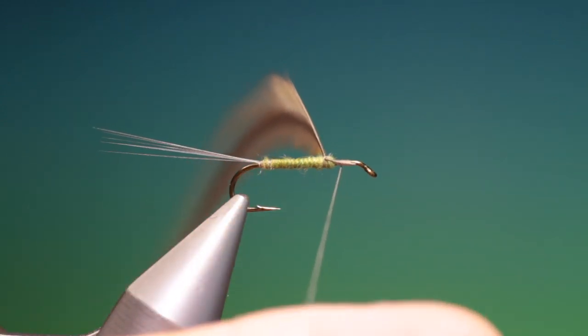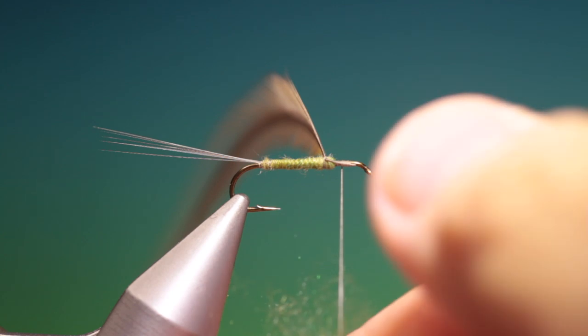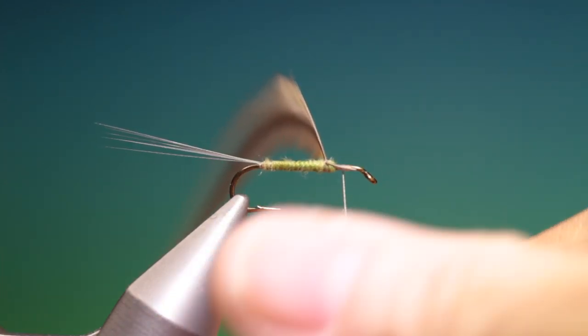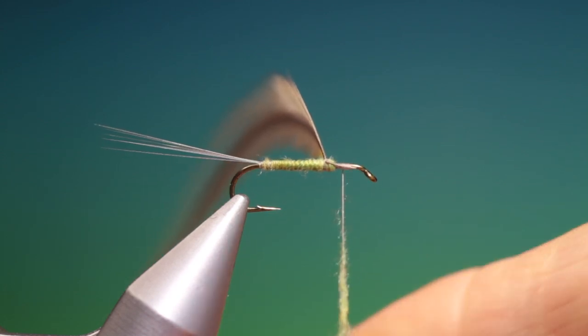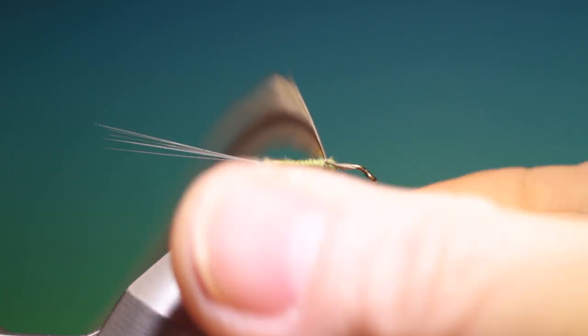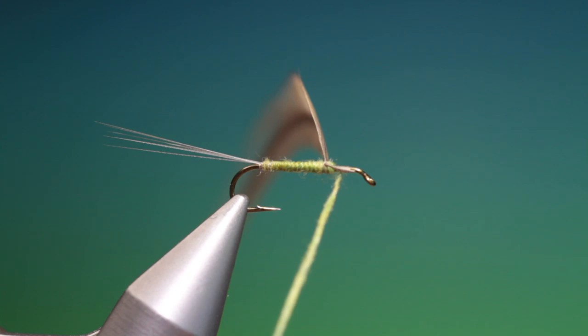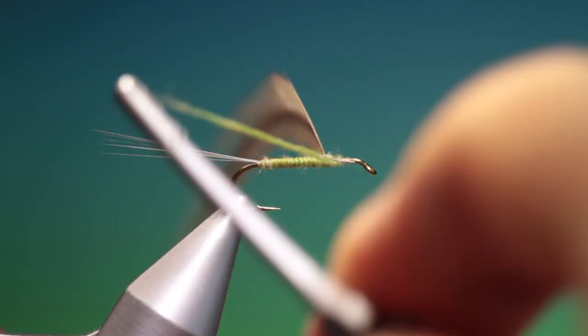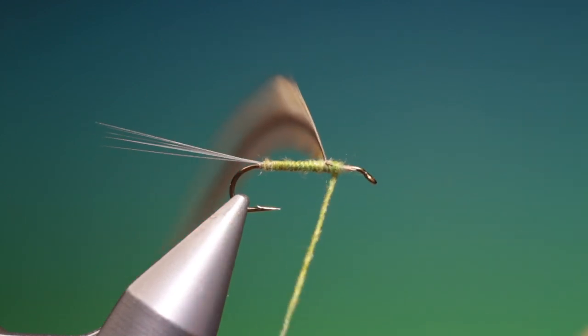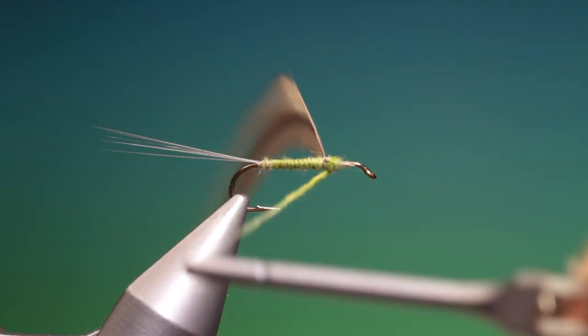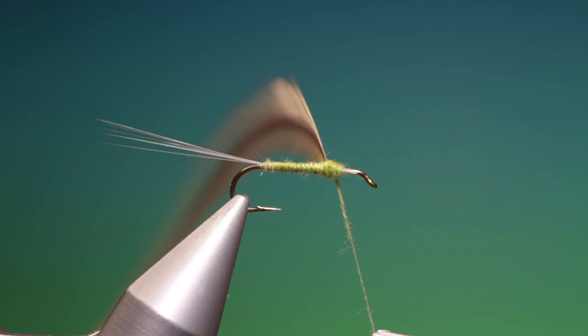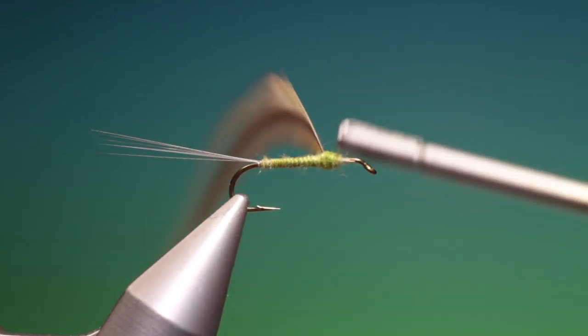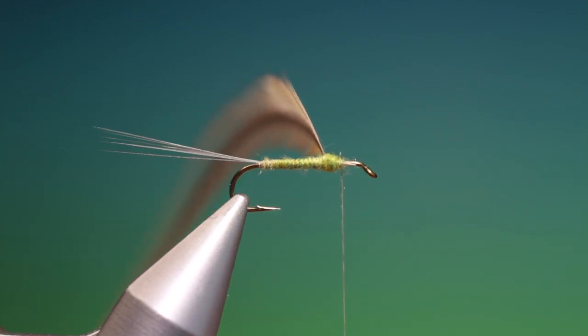And what I need is a tiny bit of the super fine dubbing. Tighten this up again and catch it in then we can tighten it a little bit more and we can go back over the thorax just to build the thorax up a wee bit. We go forward, ready for the wing.